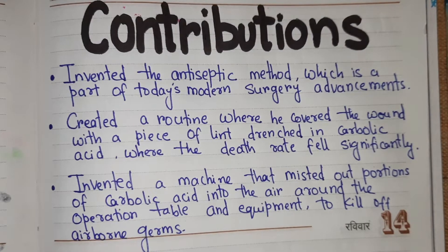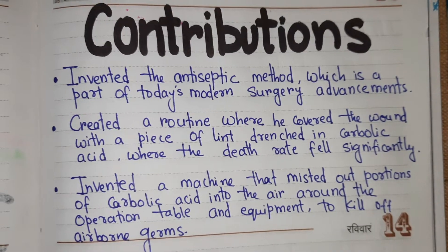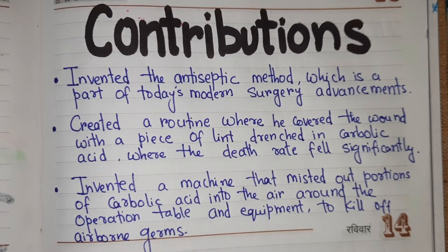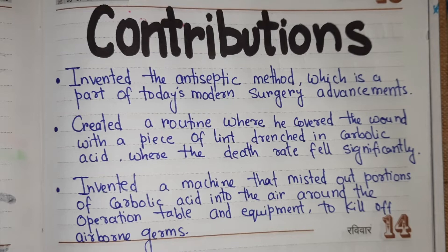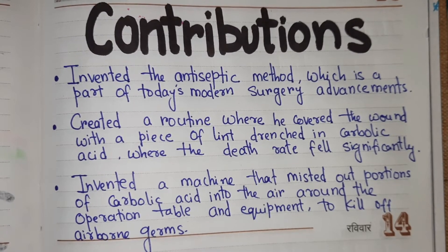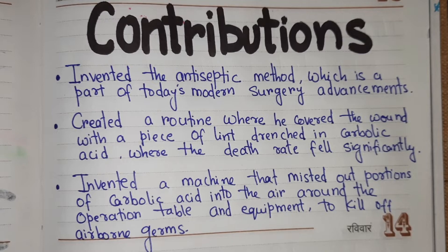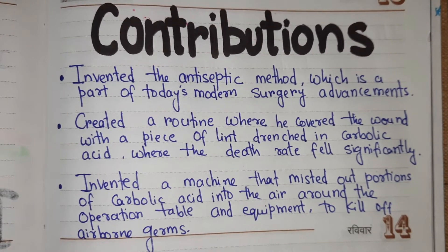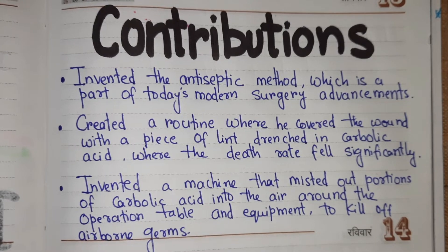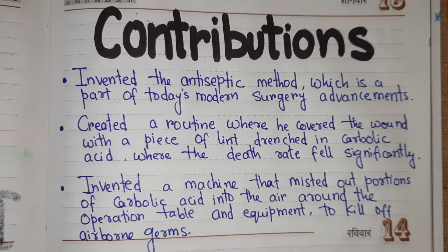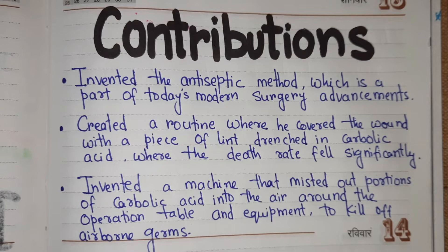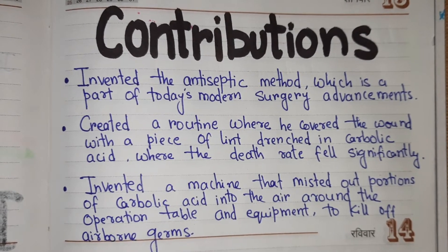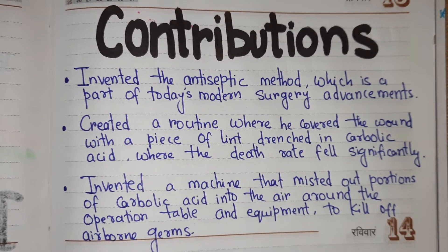Joseph Lister's contributions include inventing the antiseptic method, which is part of today's modern surgery advancements. He created a routine of covering wounds with a piece of lint drenched in carbolic acid, and the death rate fell significantly. He also invented a machine that distributed carbolic acid into the air around the operation table and equipment to kill airborne germs.